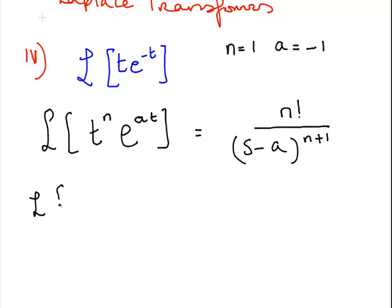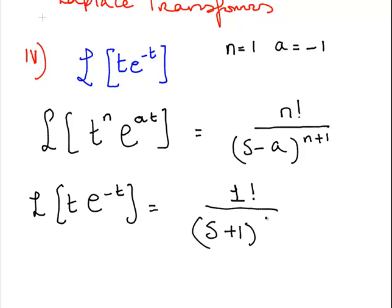The Laplace transform of t e to the minus t is 1 factorial, which is just 1. s minus a is s minus minus 1. So, that's s plus 1. And n plus 1 is 1 plus 1. That's 2. So, what we have here is 1 over s plus 1 squared.